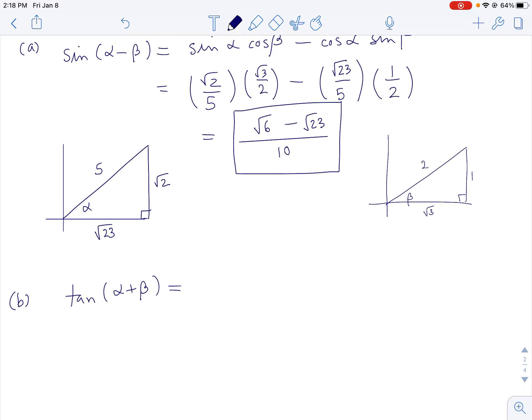The tangent of alpha plus beta is a big fraction. And on the top, it's tan alpha plus tan beta. And on the bottom, it's 1 minus tan alpha times tan beta.